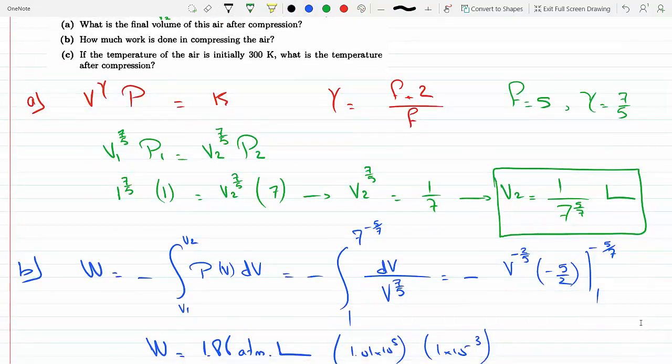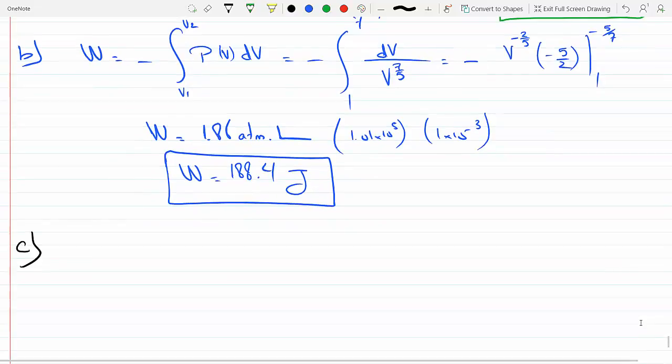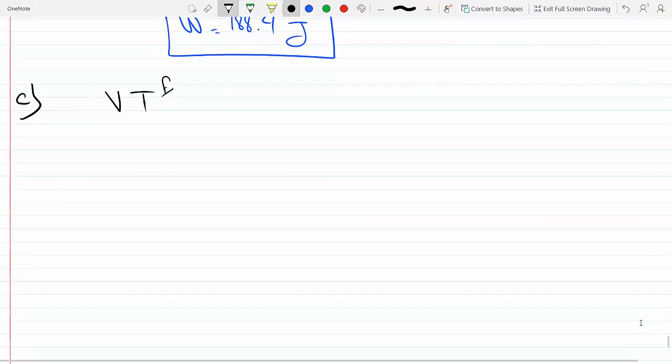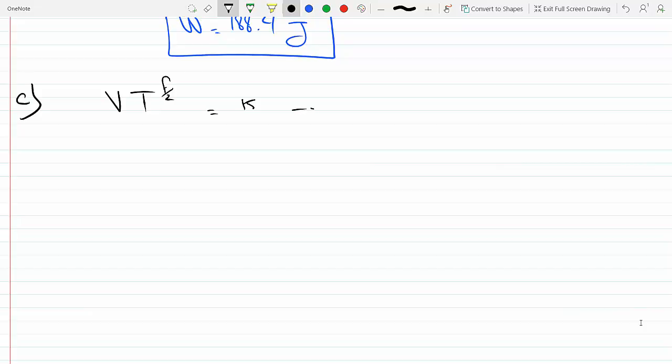Part C: If the temperature of the air is initially 300K, what's the temperature after compression? Well, we know for adiabatic compression we know that VT to the f over 2 remains the same, is equal to K.